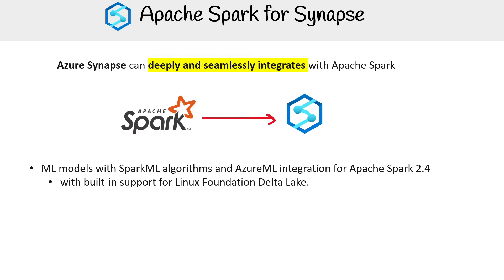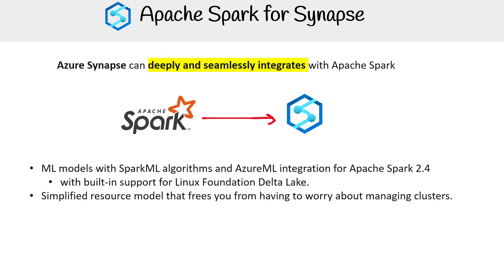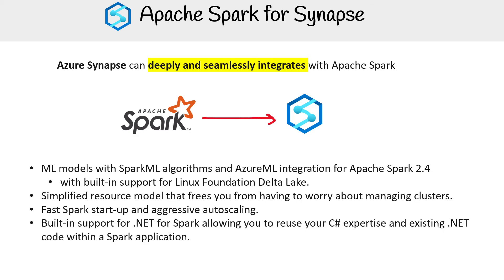There's also Apache Spark 3 — I'm surprised they're not up to date yet, at least when I wrote this. Simplified resources and models that free you from having to worry about managing clusters, fast Spark startup and aggressive auto-scaling, and built-in support for .NET for Spark, allowing you to reuse C# expertise in existing .NET code.